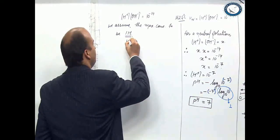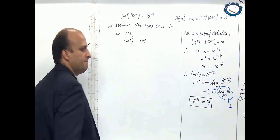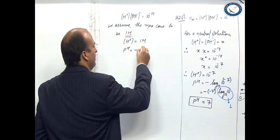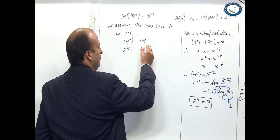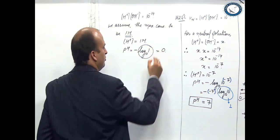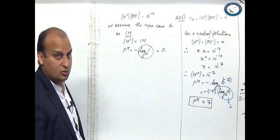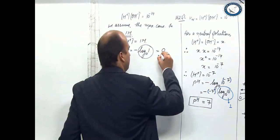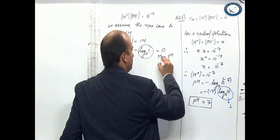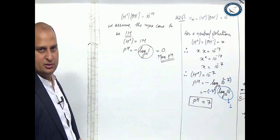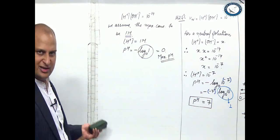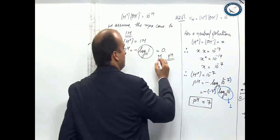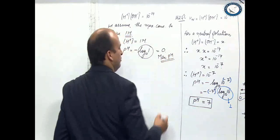So if H plus concentration is 1 molar — this is the maximum concentration — pH will be equal to negative log to the base 10 of 1, and the value of log 1 is 0. So the minimum possible value of pH is 0. The maximum concentration of H plus gives the minimum value of pH.